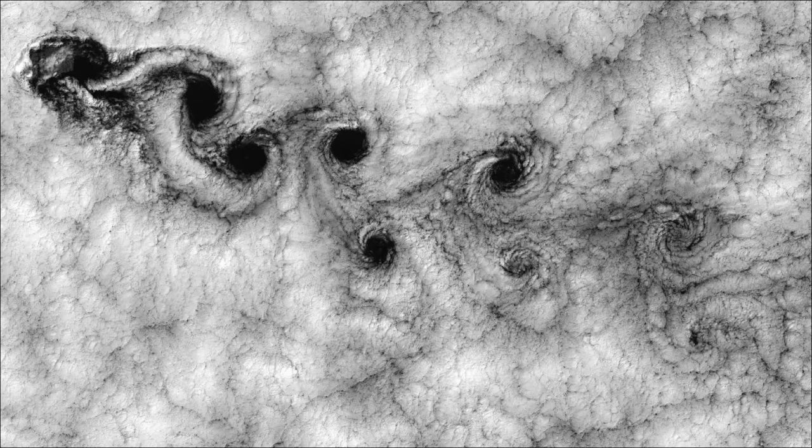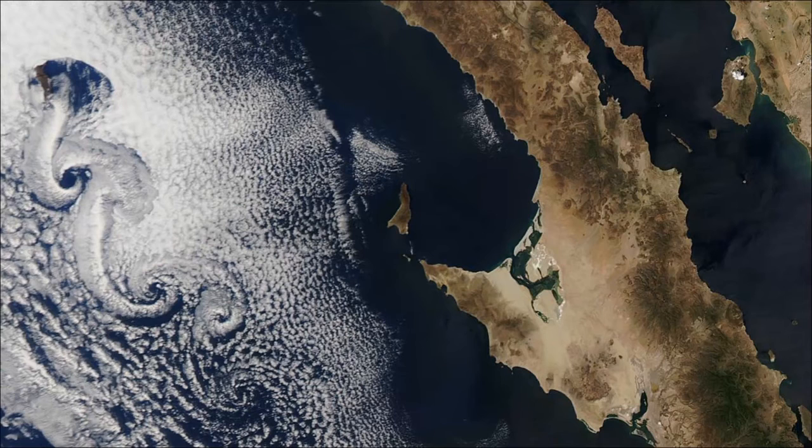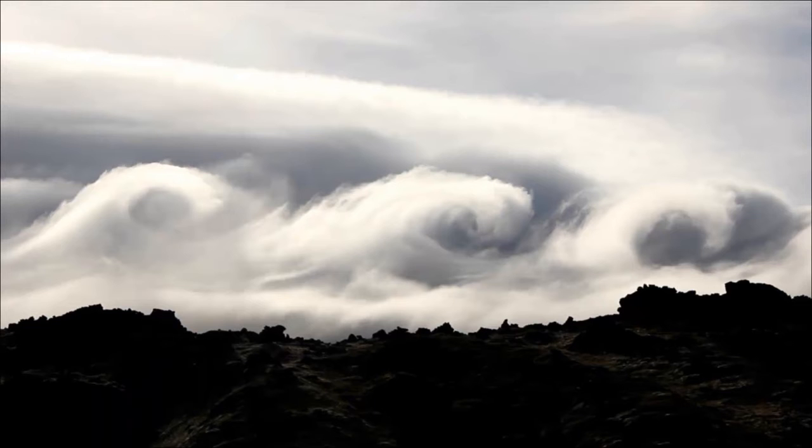And what I like the most about them is that they happen on many scales in nature. This is actually a satellite picture and the obstacle in this fluid is an island. This is another example of vortex shedding. You may have seen this in a fluid dynamics class, fluid mechanics class in a lab, in a really small scale, but it also happens at larger scales.